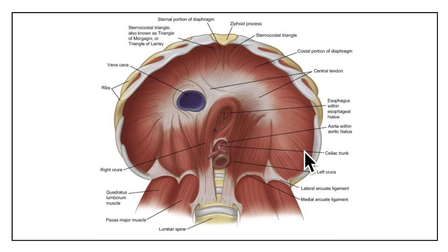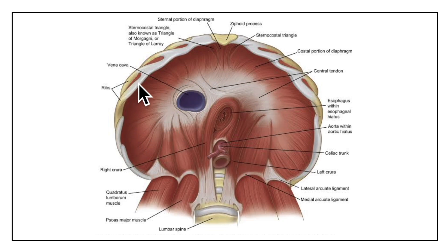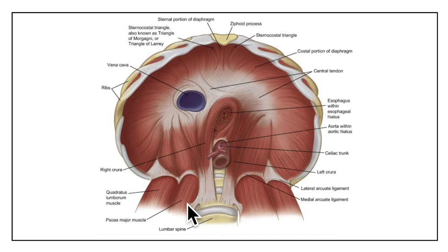Here in this diagram we can see the inferior aspect of the diaphragm, the ribs and the costal cartilages, the xiphoid process, the lumbar vertebrae, and the muscles — the quadratus lumborum muscle and the psoas major muscle.